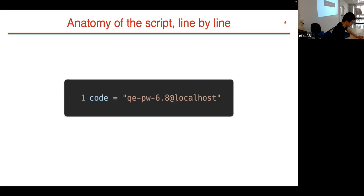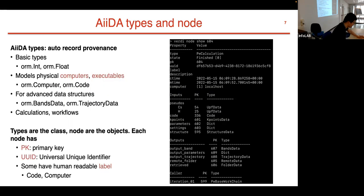In the first part of the script, we define a code: qepw 6.8 at localhost. To understand this, let's look at the basic AiiDA types. In AiiDA, to automatically record provenance, we have types like orm.Int, orm.Float, orm.Computer, and Code to model physical computers and executables. We also have BandStructureData and TrajectoryData for advanced data structures, plus types for calculations and workflows.